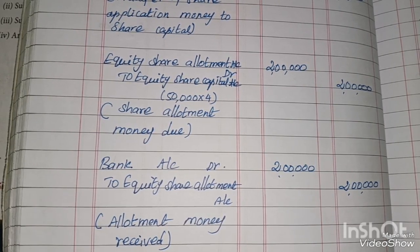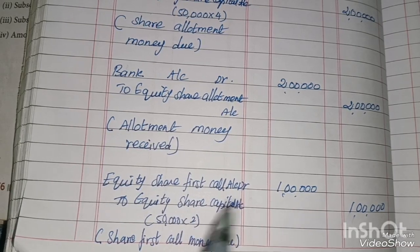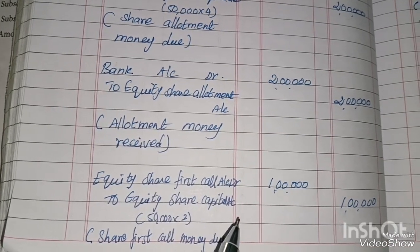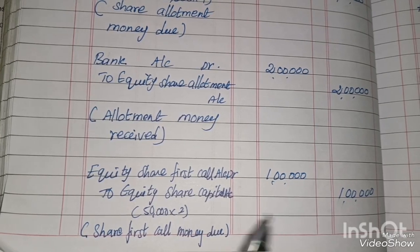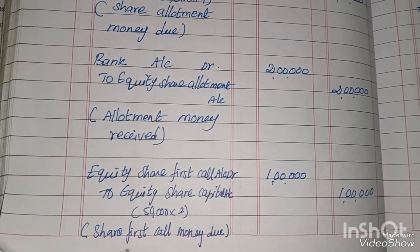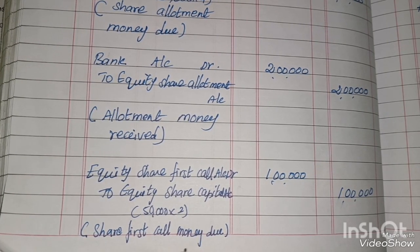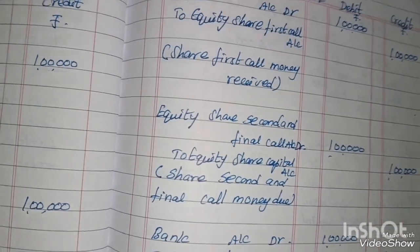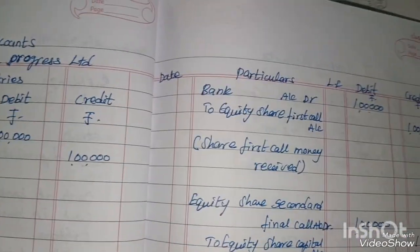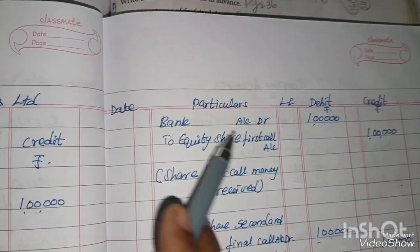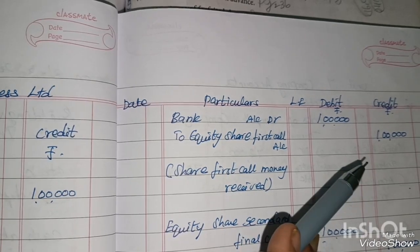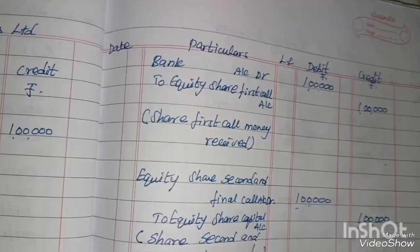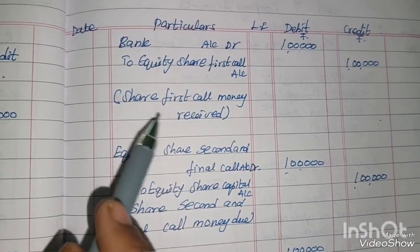Entry 5 — First call due: Equity Share First Call Account Dr. to Equity Share Capital Account — 50,000 × Rs. 2 = Rs. 1,00,000. Narration: Share first call money due. Entry 6 — First call received: Bank Account Dr. to Equity Share First Call Account — Rs. 1,00,000. Narration: Share first call money received.